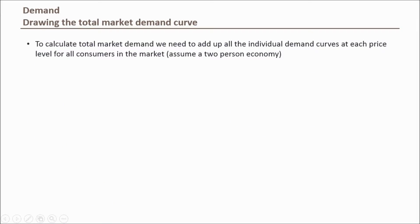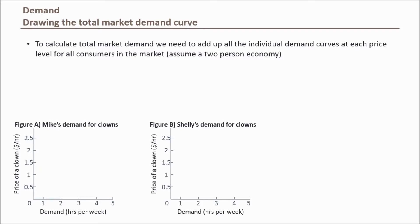So far we have concentrated on just one consumer, but in reality there is more than one buyer in each market. By adding the quantities demanded by all consumers at each possible price, we can investigate overall market demand instead of just one individual's demand. Let's assume there are only two buyers in the market for party clowns — Mike and Shelley. Figure A is Mike's individual demand curve for party clowns, labeled DM, where the y-axis shows the hourly rate for hiring a clown and the x-axis shows how many hours Mike will rent per week.